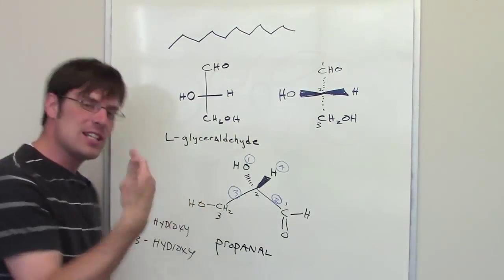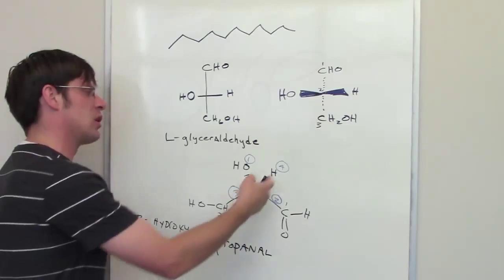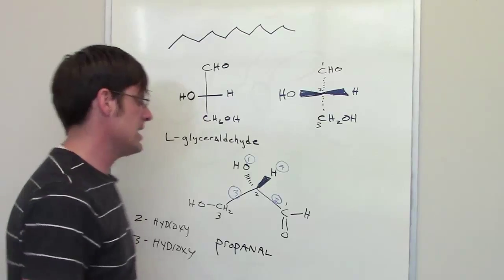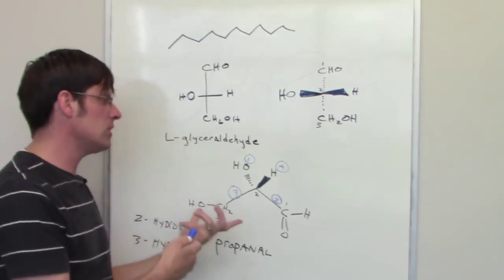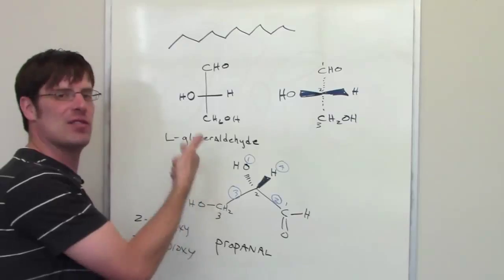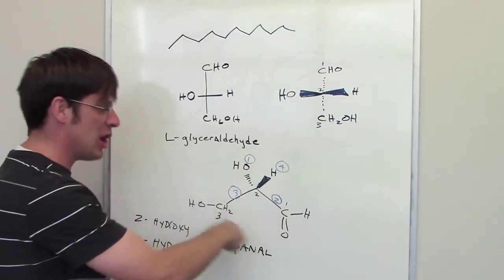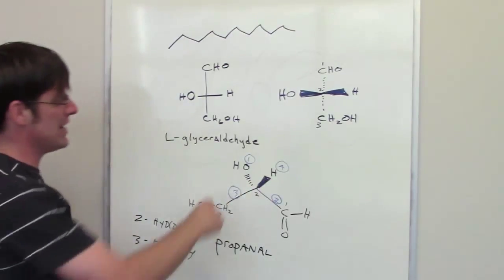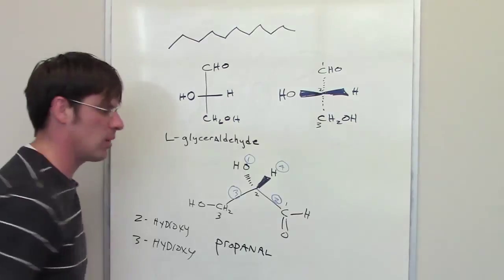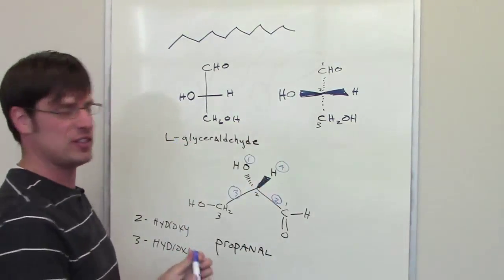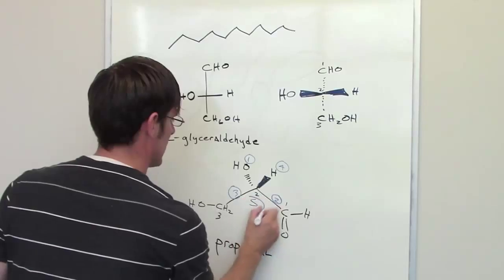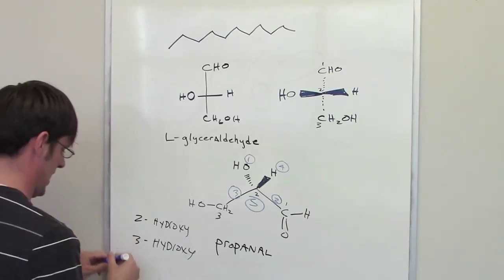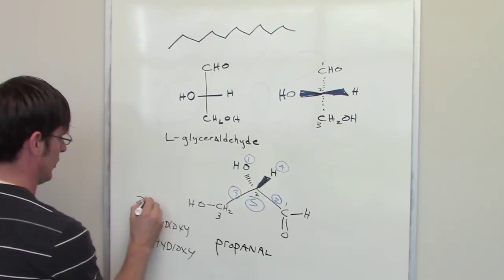When determining if a stereocenter is R or S, we trace a circle going from 1 to 2 to 3. If it's clockwise, the direction I would turn my wheel if turning right, it's R. If counterclockwise, the direction I would turn left, it's S. I remember turning right is R and turning left is S-left. However, I have to point my lowest priority group, group 4, three-dimensionally away from us. It's pointing towards us here, so I have to imagine what it would look like from the opposite side of this wall. It would be counterclockwise, and counterclockwise is turning left or S-left, which means this is an S stereocenter.